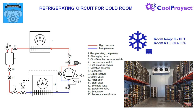A cold room works normally between 0 to 10 degrees and relative humidity from 80 to 90%, always positive temperature. In this screen we can see the components for a cold room circuit represented by their normalized symbols we use here in Spain. In red color we have the high pressure line and in blue color we have the low pressure line. Let's review the main components.